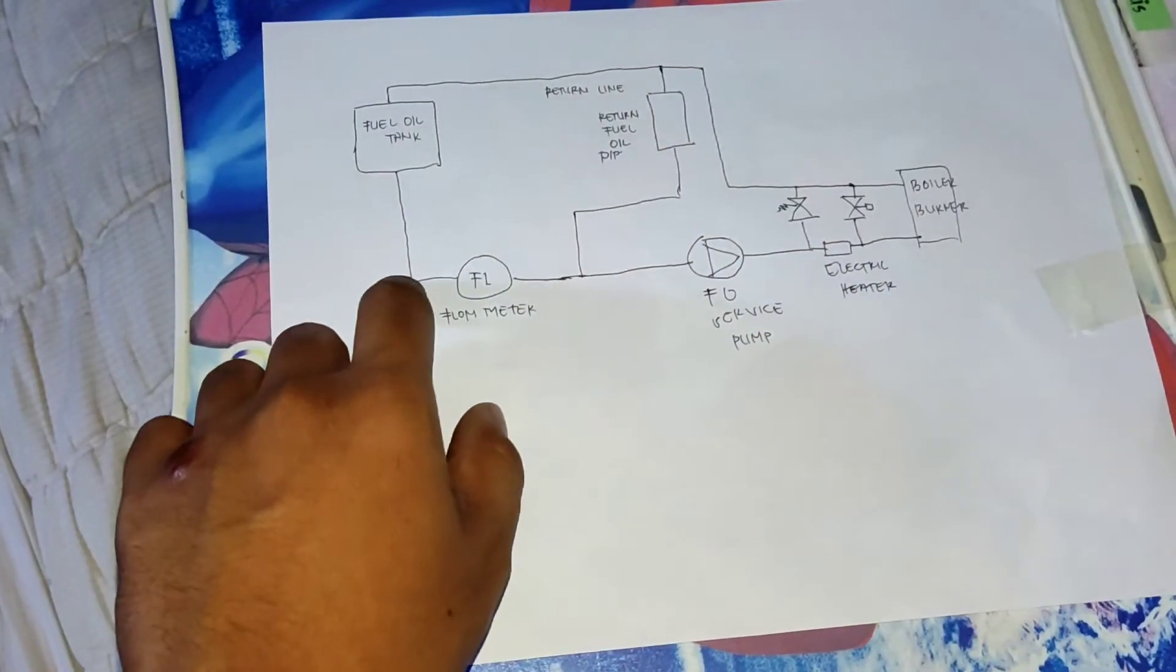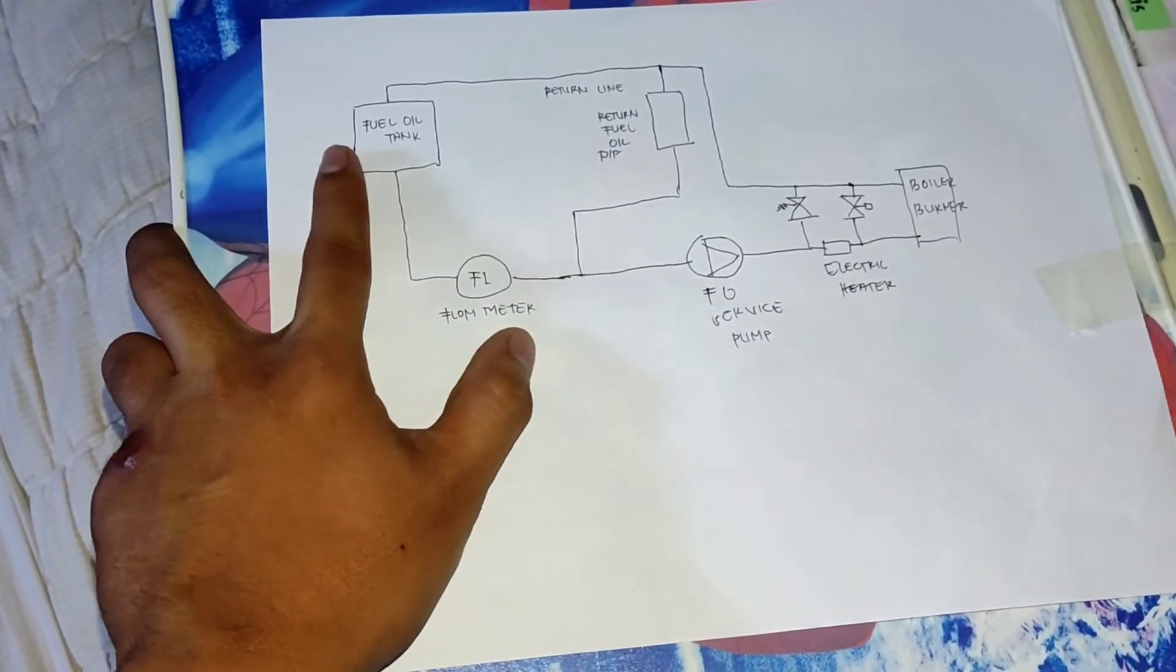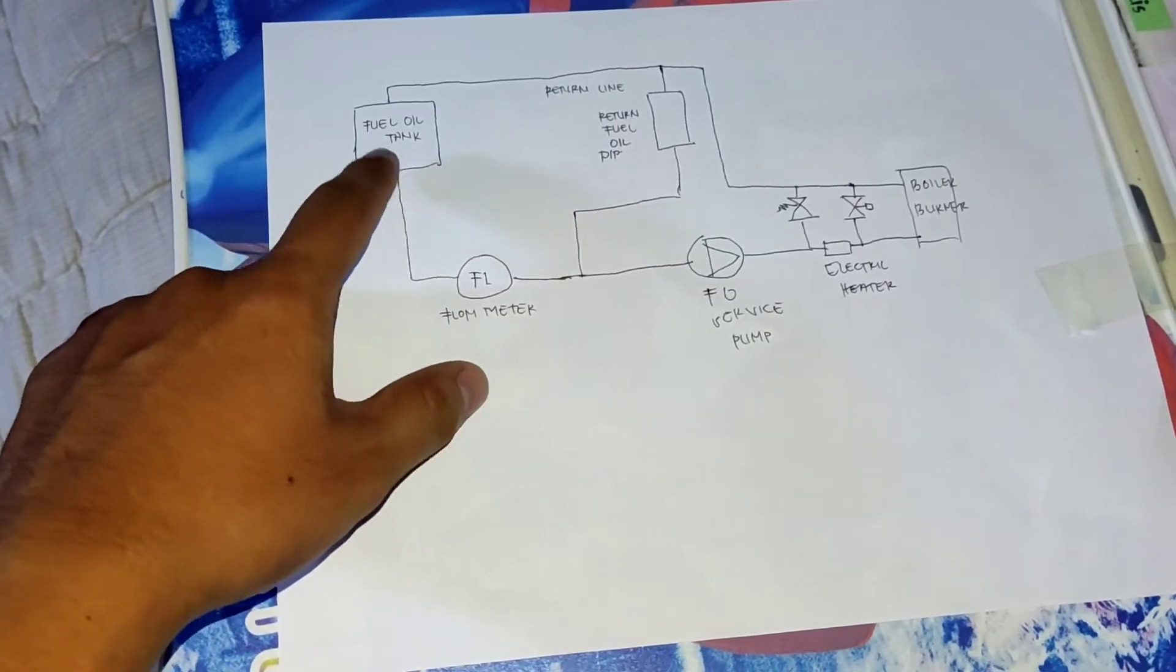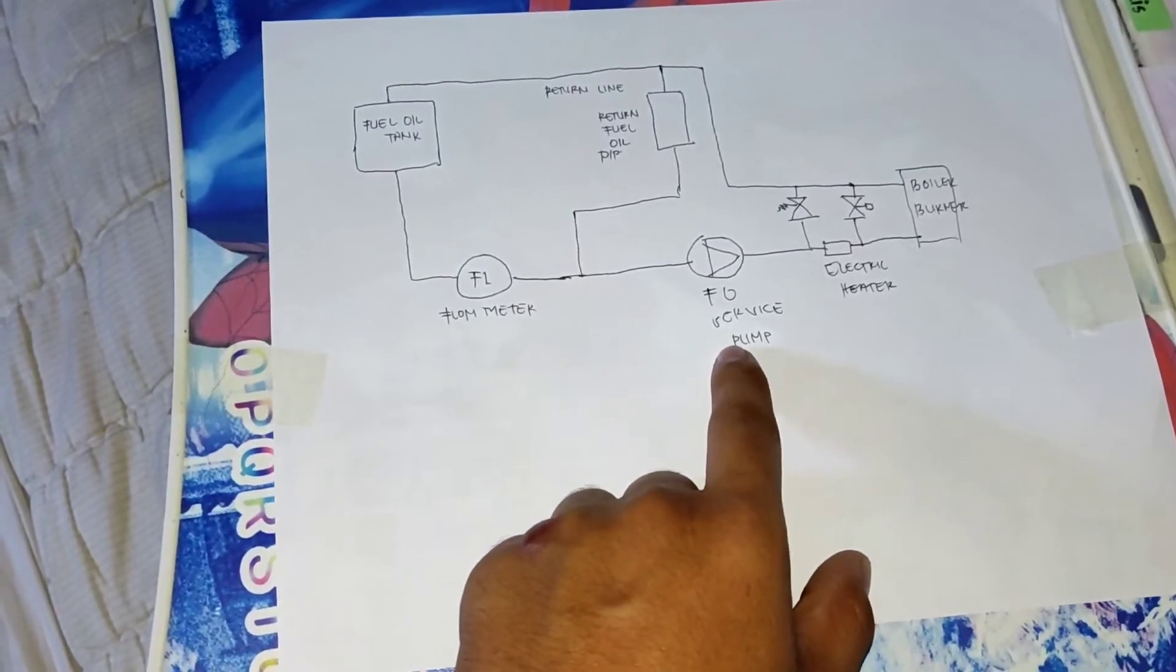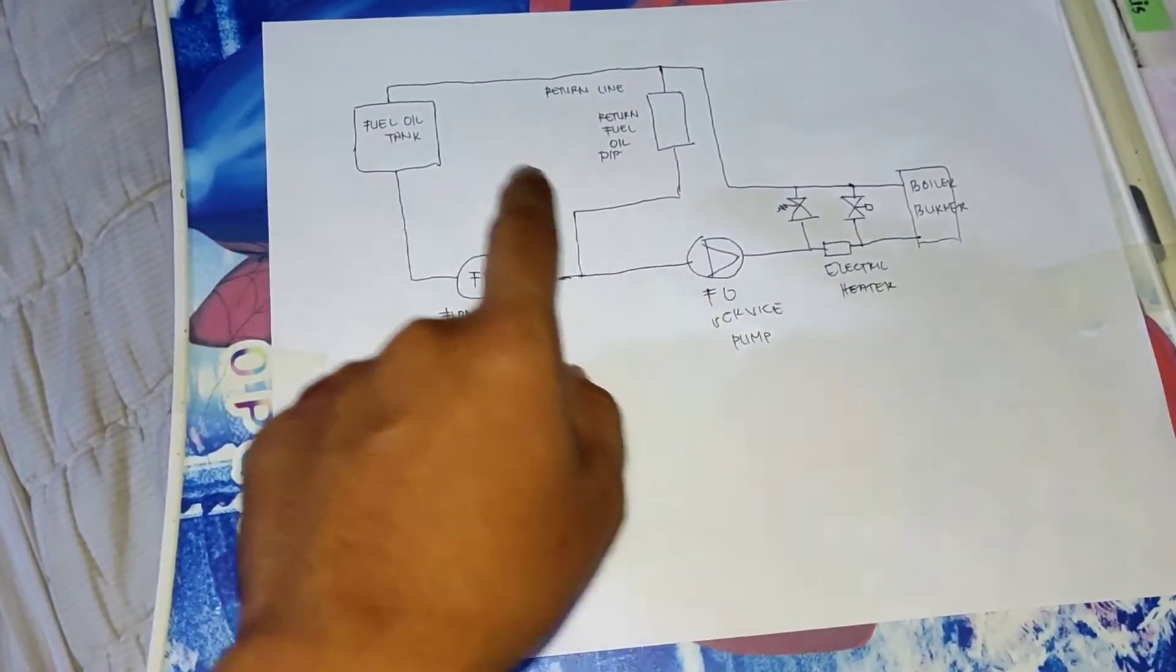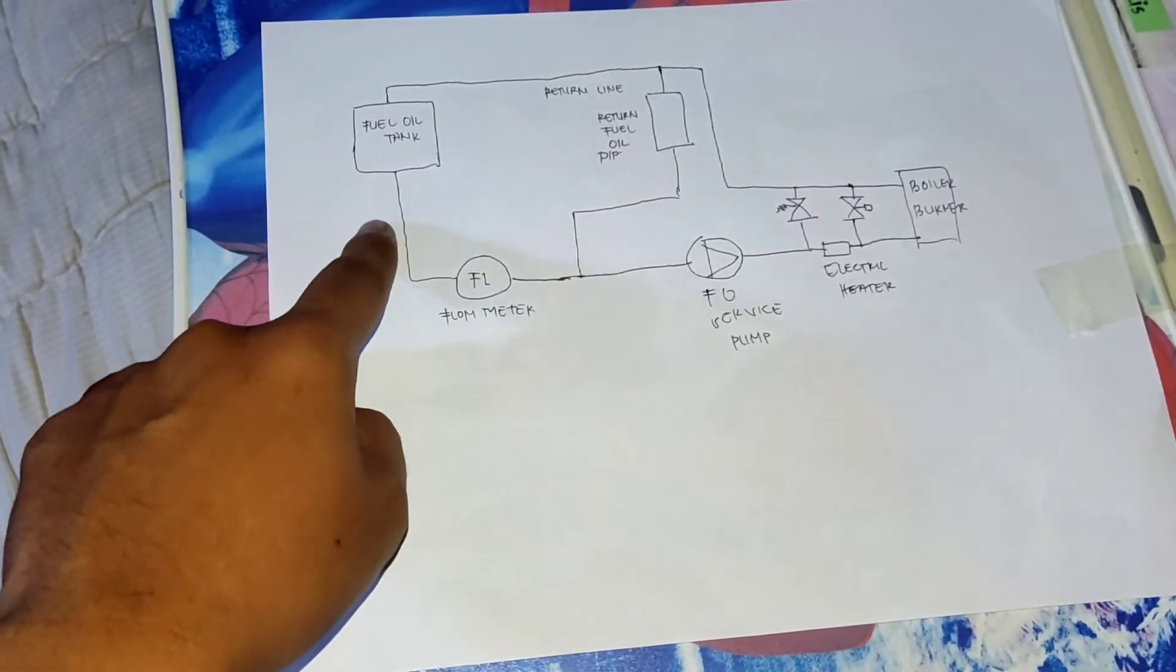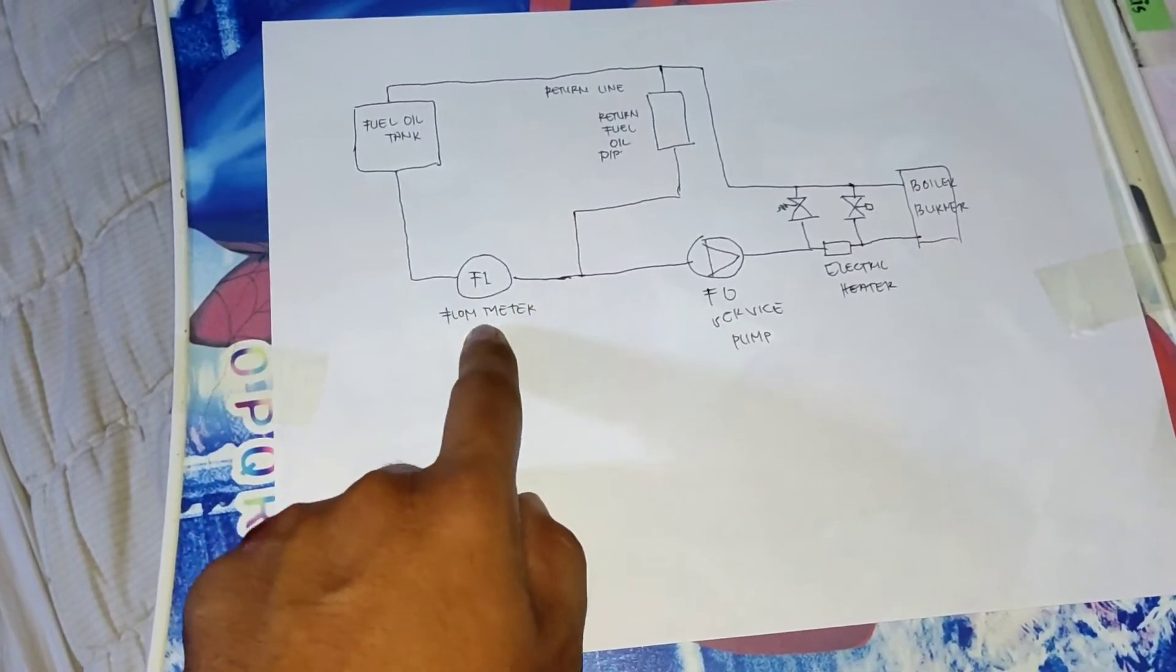So this is the simplified fuel oil system diagram. We have here the fuel oil tank. Fuel oil tank serves as storage of the fuel oil, and we have here the fuel oil service pump. Fuel oil service pump is responsible for pumping out the fuel oil.